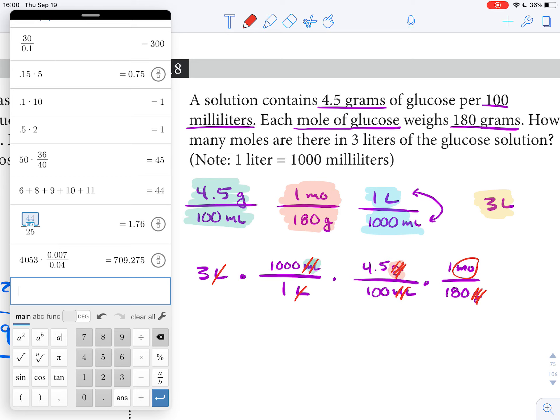Now that I have it all out, I can just go ahead and punch this into the calculator. I'm going to multiply all my numerators first, and then I'll divide by my denominators. So that should be 3 times 1000 times 4.5 times 1.